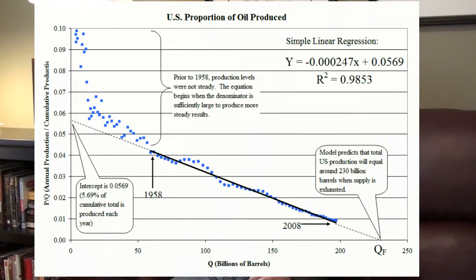After the denominator of Q becomes significantly large, P over Q begins to decline linearly. In the chart of US production, this begins in 1958 and continues all the way to 2007. A simple linear regression for these points yields the important y equals mx plus b equation we need to build our logistic representation of production. In this case, the regression yields the following equation: y equals negative 0.000247x plus 0.0569.